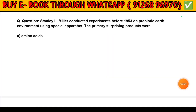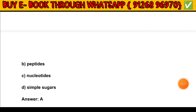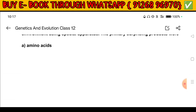Question number 11. Stanley L. Miller conducted an experiment in 1953 on prebiotic environment using a special apparatus. The primary surprising products were: Option A — Amino acids. Option B — Peptides. Option C — Nucleotides. Option D — Simple sugars. The answer is Option A: Amino acids.